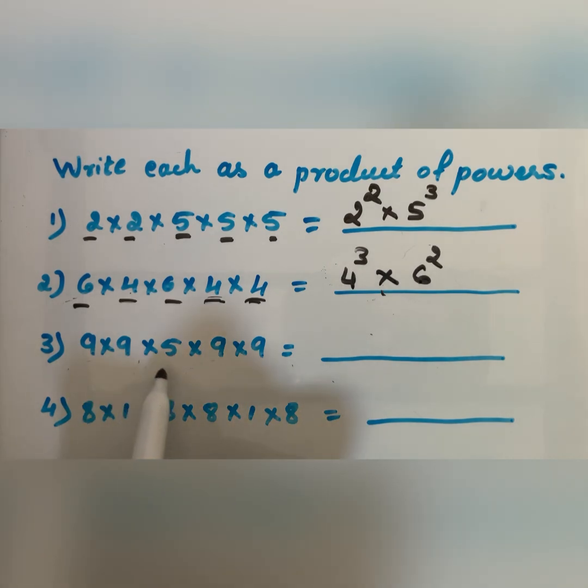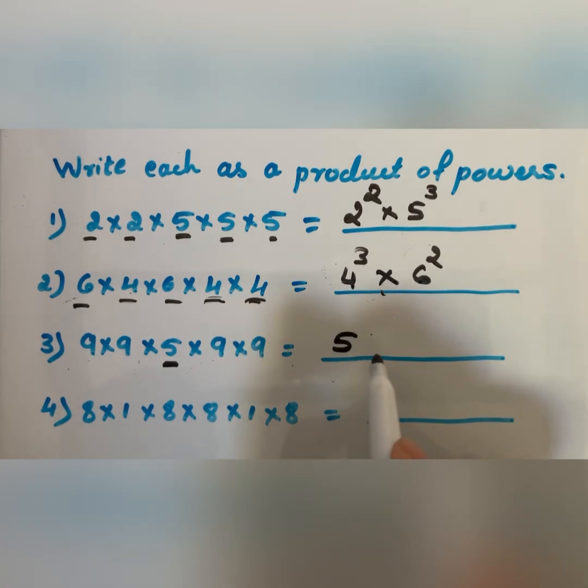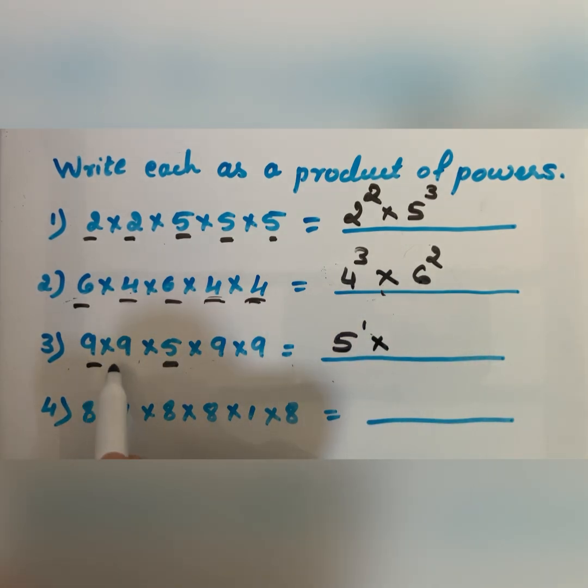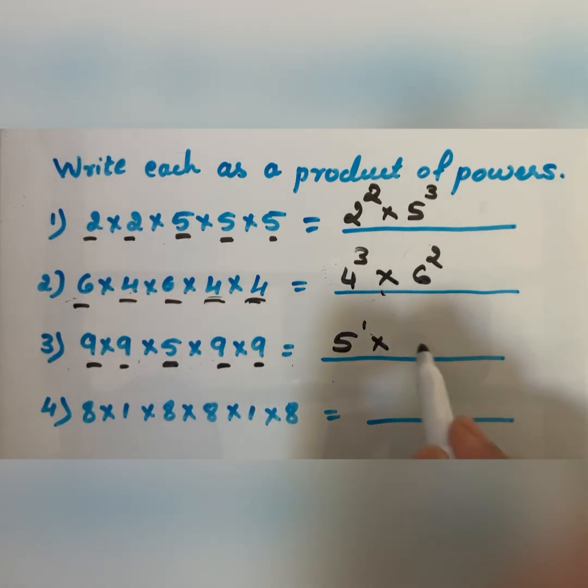Similarly, here the smaller number is 5. 5 is taken only 1 time—you can write 5 to the power 1 or just 5. And 9 is taken 4 times.